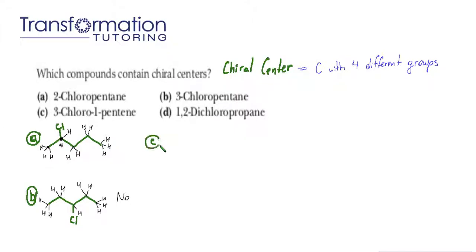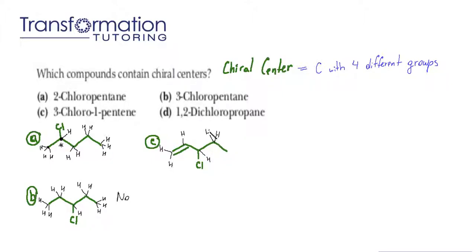Let's go to part C: 3-chloro-1-pentene. Again, we draw our pentane molecule. 1-pentene means the double bond is between the first and second carbon, so we put a double bond here. Carbon 3 has a chlorine on it. We can add hydrogens to see which carbons will be chiral centers and which will not — enough hydrogens so that every carbon has four bonds, just like it wants to. Now that our hydrogens are added, the carbon we will be focusing on is the middle one because it looks like it has the most different groups.